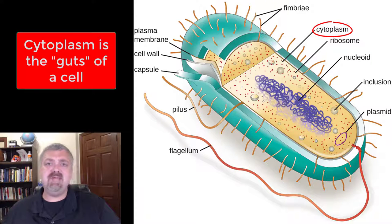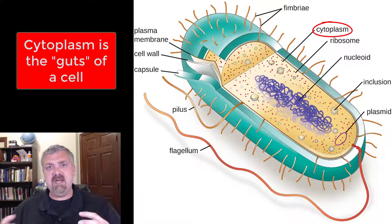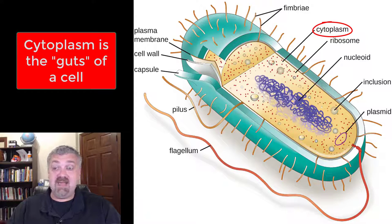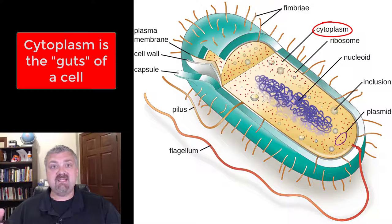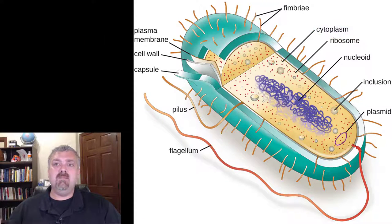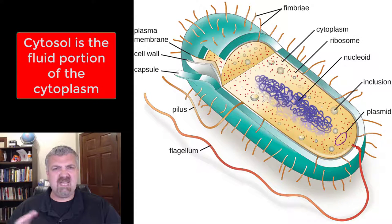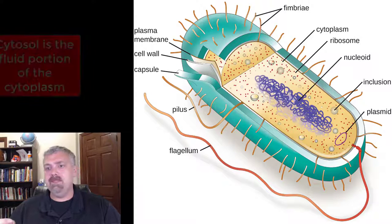Next we have cytoplasm. Cytoplasm is basically everything inside the cell membrane or plasma membrane — it doesn't matter about the nucleus here because bacteria don't have a nucleus. Think of it as all the guts on the inside of a cell. Compare that to cytosol, which would just be the fluid inside — they're not exactly interchangeable.